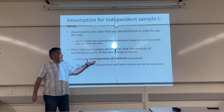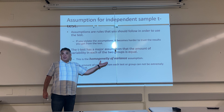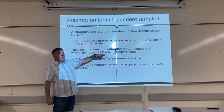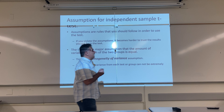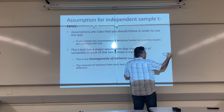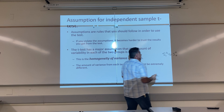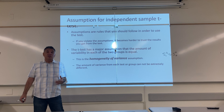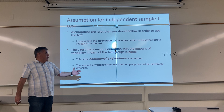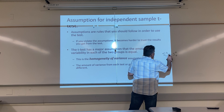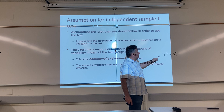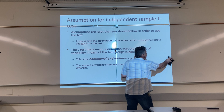Homo meaning one, and geneity has the word gene in it, meaning from one — the same. It means that the variance or variability in each of the two groups is equal. Now they don't have to be exactly equal — they just cannot be significantly different. We're saying the variance from the first group is about equal to the variance from the second group. If this is true, then we can trust the results of the test. The amount of variance from each group cannot be extremely different — they're just about the same. That tilde means 'about.' So there's my variance for group one, there's my variance for group two, and we're saying they're not really different.